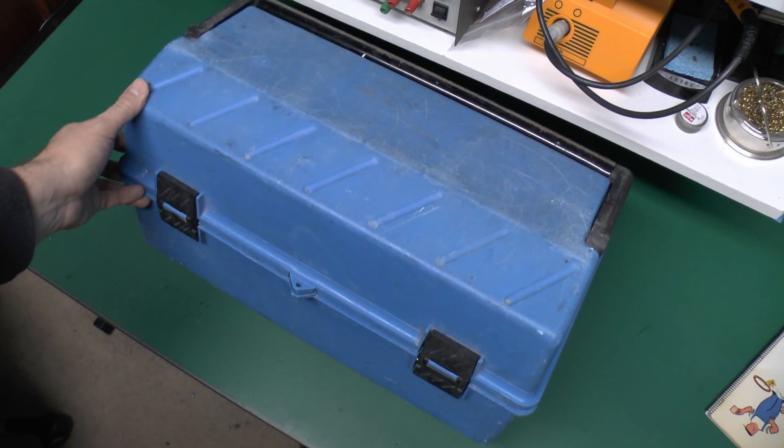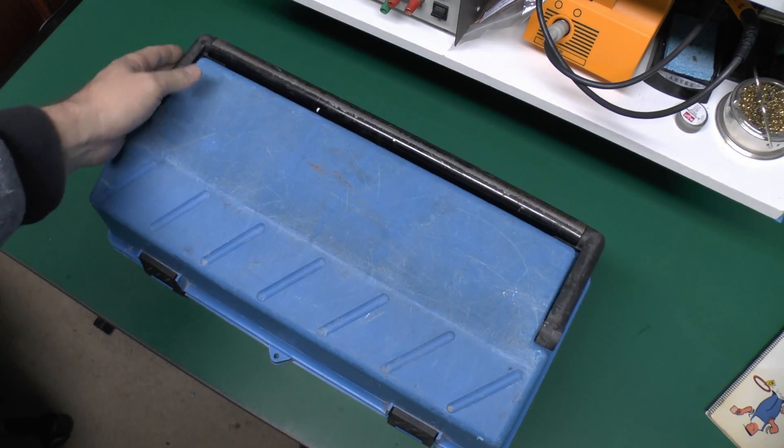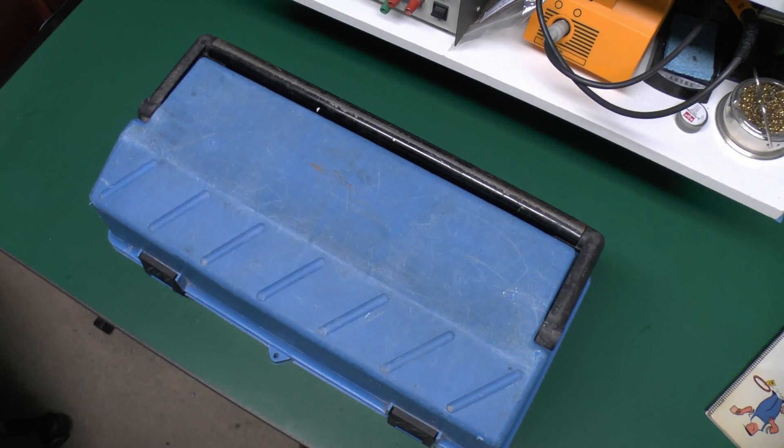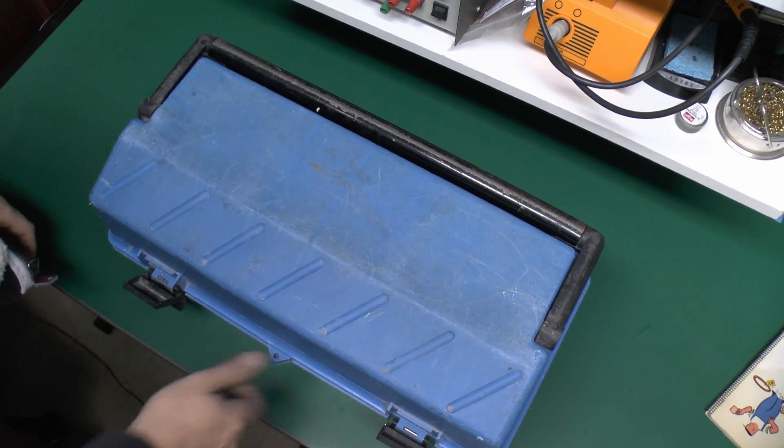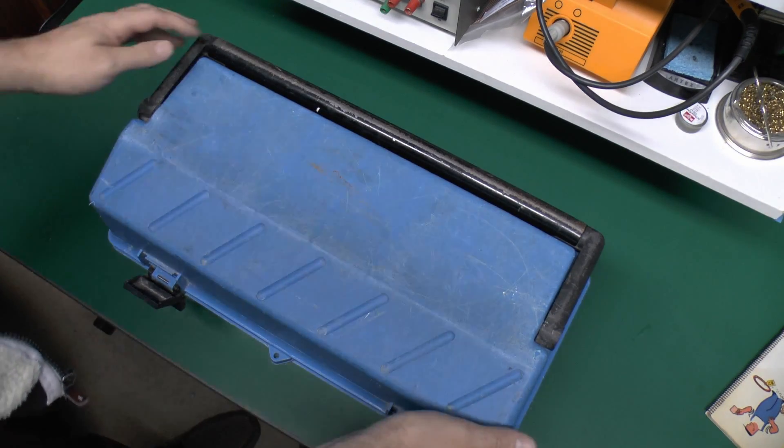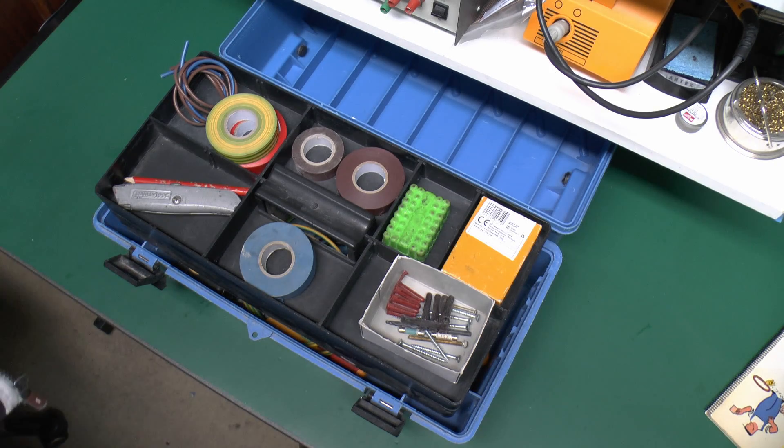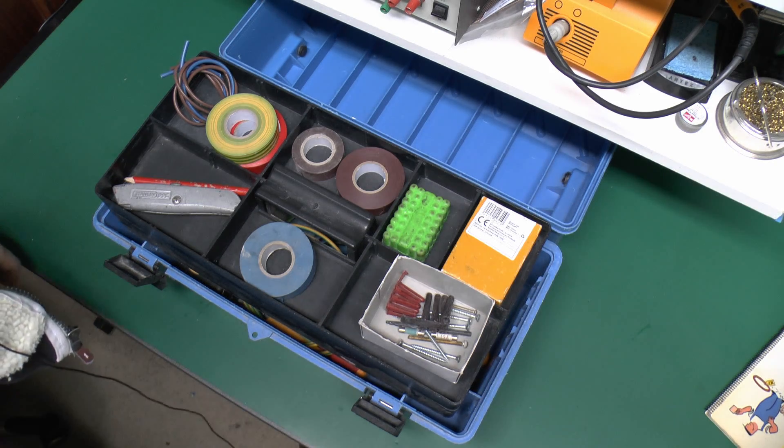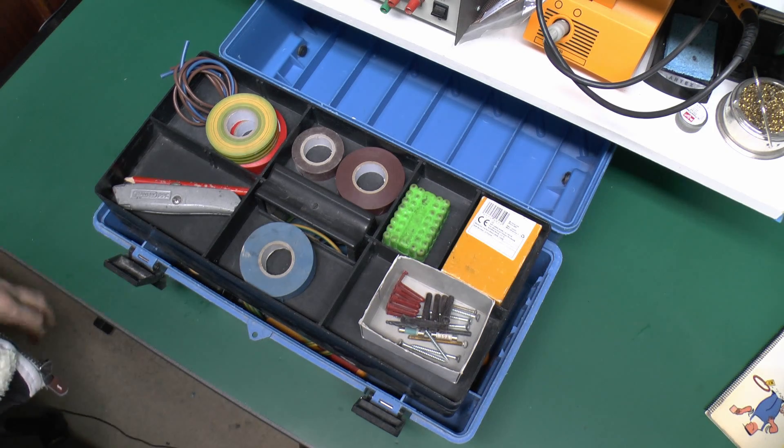As you can see it's made of blue plastic, fairly substantial, metal handle there and it's pretty much worn with a fair amount of dirt on it. So let's have a look inside. This is one of several toolboxes and doesn't contain everything, but this is the one mostly used for electrical type things and used most often.